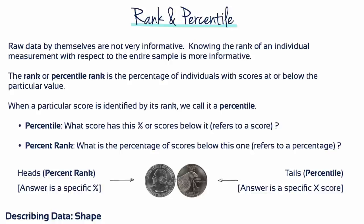The rank or percentile rank of a particular score is defined as the percentage of individuals in the distribution with scores at or below that particular value. When a score is identified by its percentile rank, the score is called a percentile. Notice that percentile rank refers to a percentage and that percentile refers to a score.